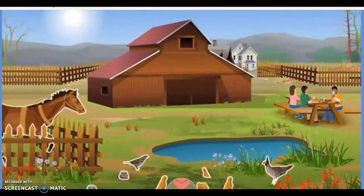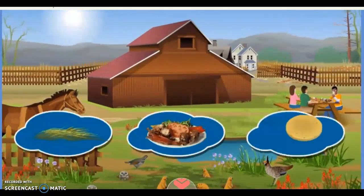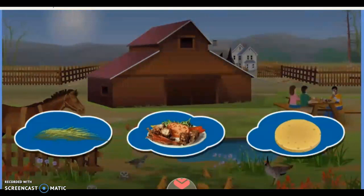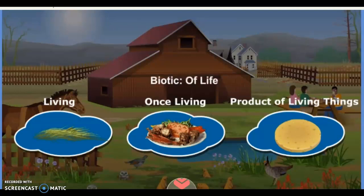The people, the animals, the plants, and the food on the table are either currently living, were once living, or came from living things. These are the biotic components. Biotic means of life.